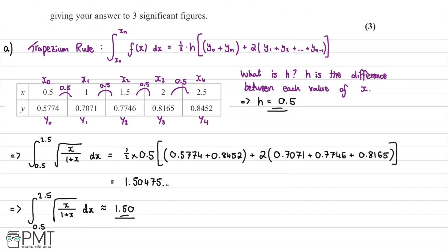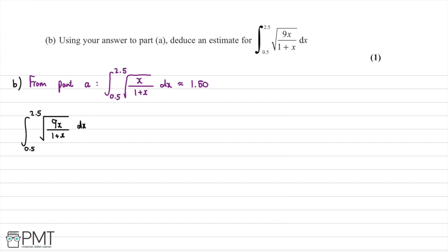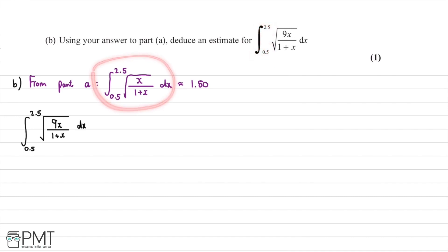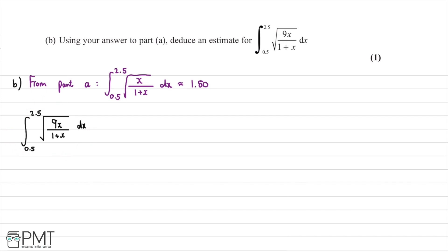In part b, we use our answer from part a to deduce an estimate for the integral from 0.5 to 2.5 of √(9x/(1+x)) dx. The only difference is the coefficient 9 in front of x. Since we're integrating a constant multiple, we can take the √9 outside the integral.